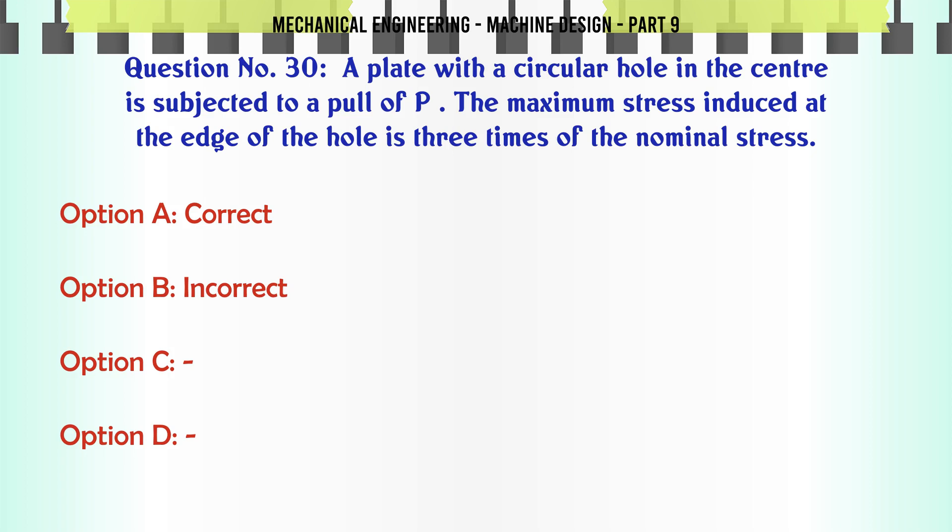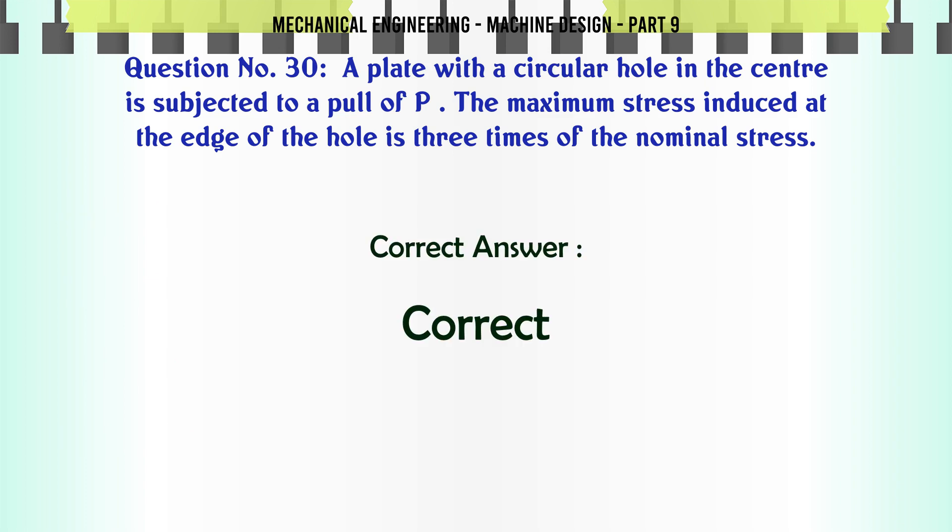A plate with a circular hole in the center is subjected to a pull of P. The maximum stress induced at the edge of the hole is three times of the nominal stress. A. Correct, B. Incorrect, C. D. The correct answer is Correct.